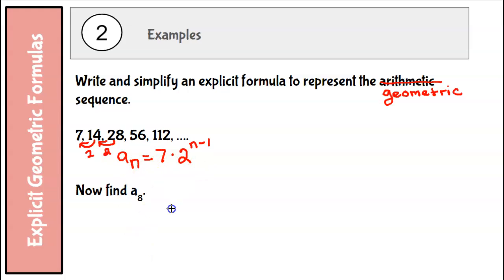That's my explicit formula. Okay, now find a sub 8. So my first term is 7 times 2 to the n minus 1. So 2 to the 7th power. I have 1 less 2 than the term number I'm trying to find.